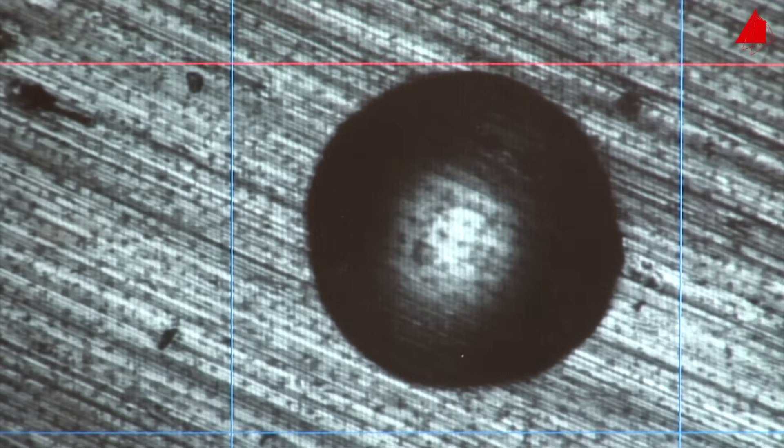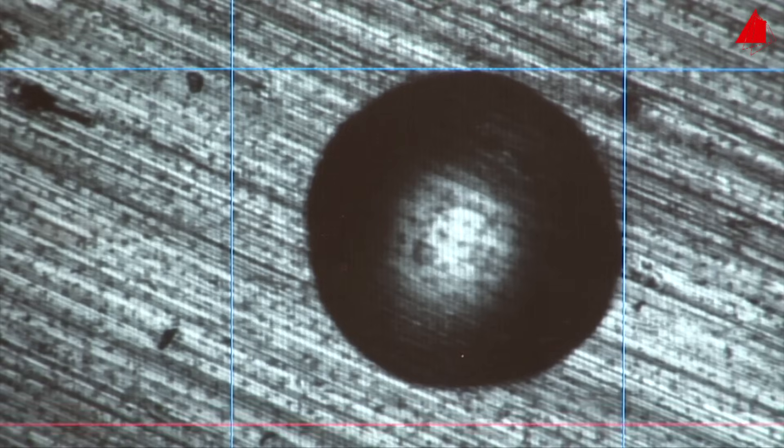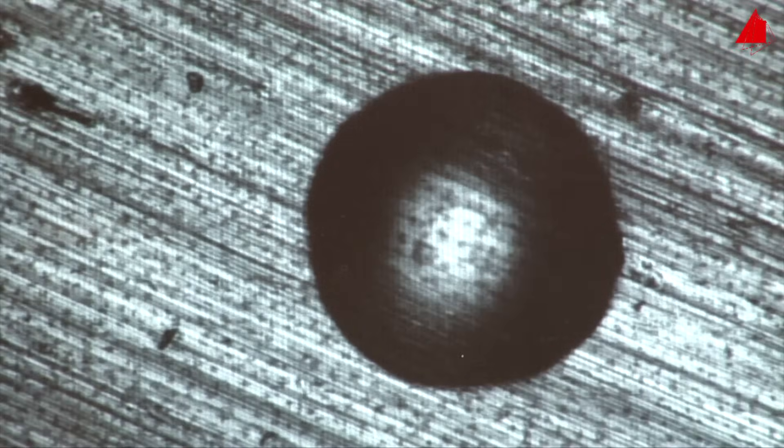With the control knob, the tester places four measuring lines on the edges of the indentation to measure its diameter. That's it! The testing machine can now calculate the Brinell hardness.